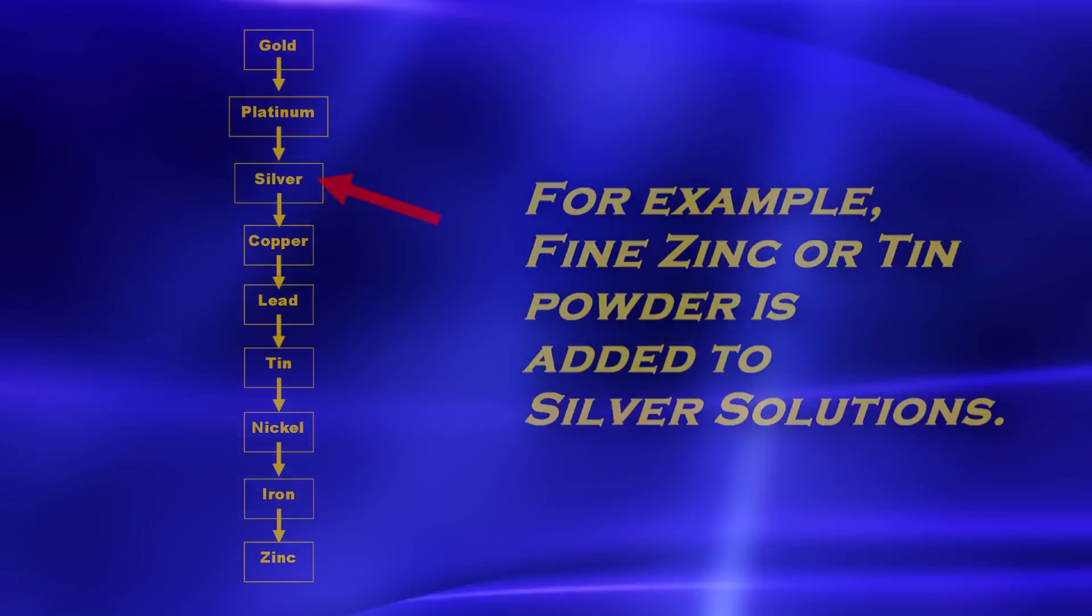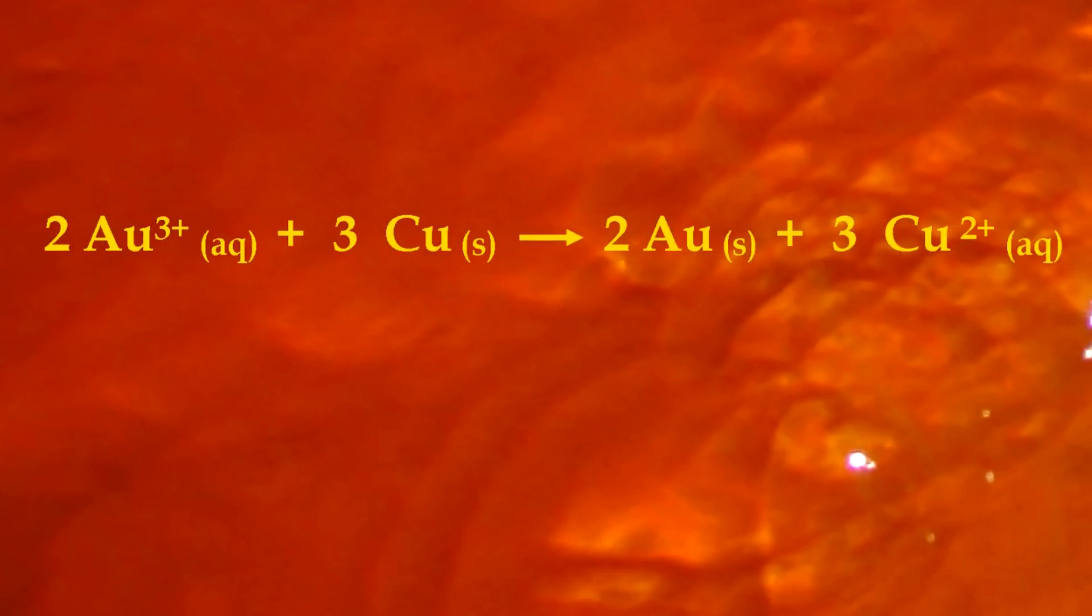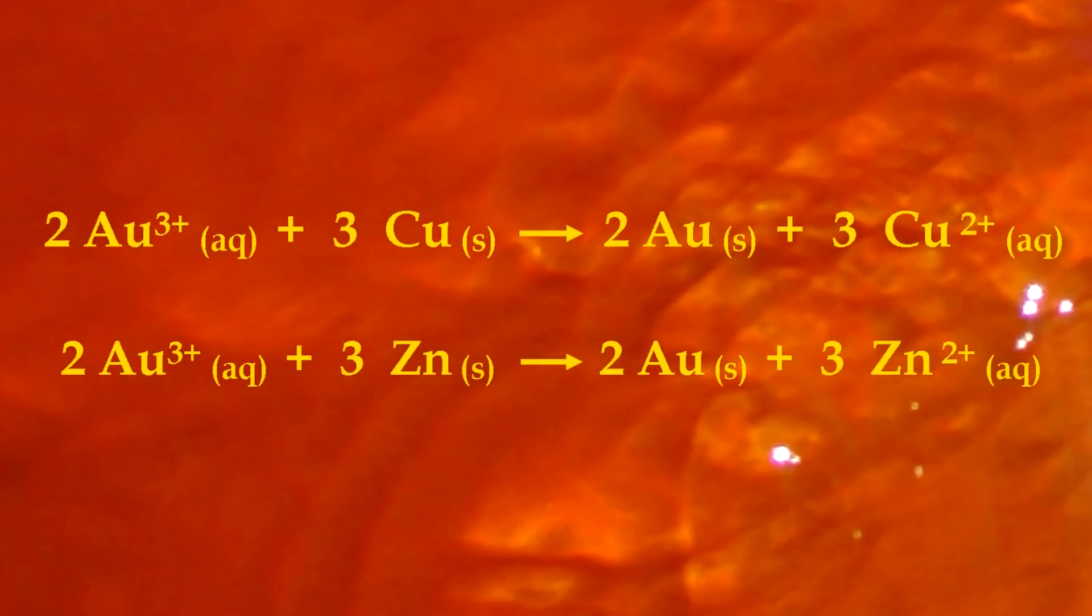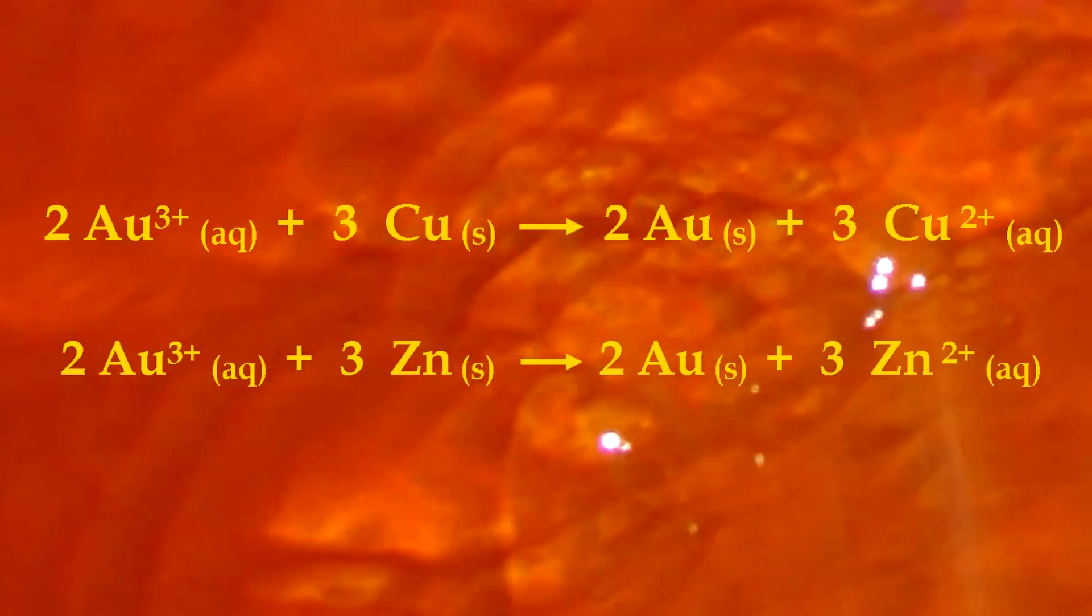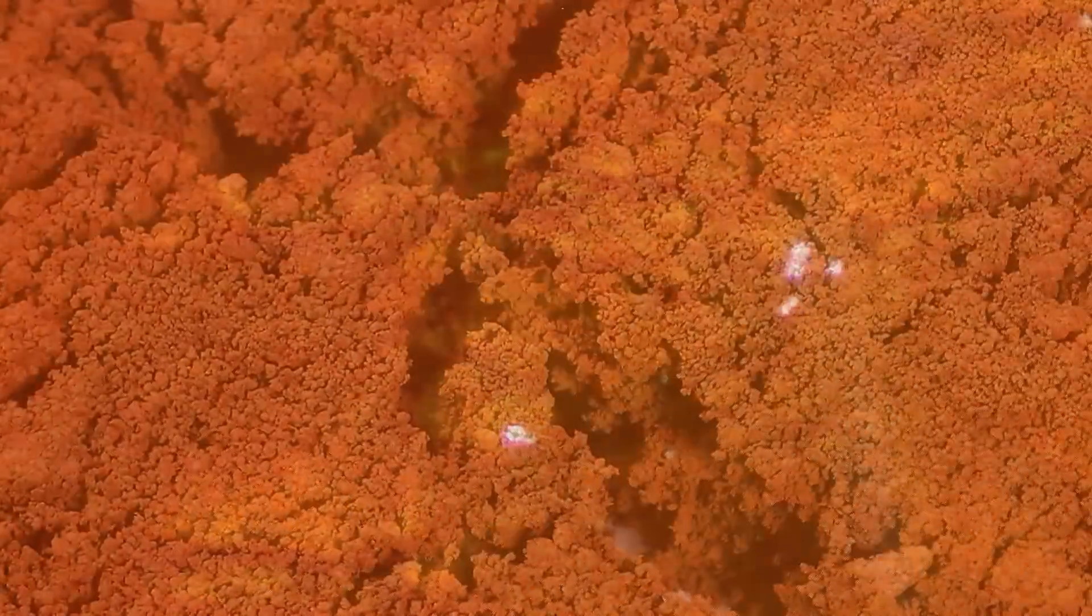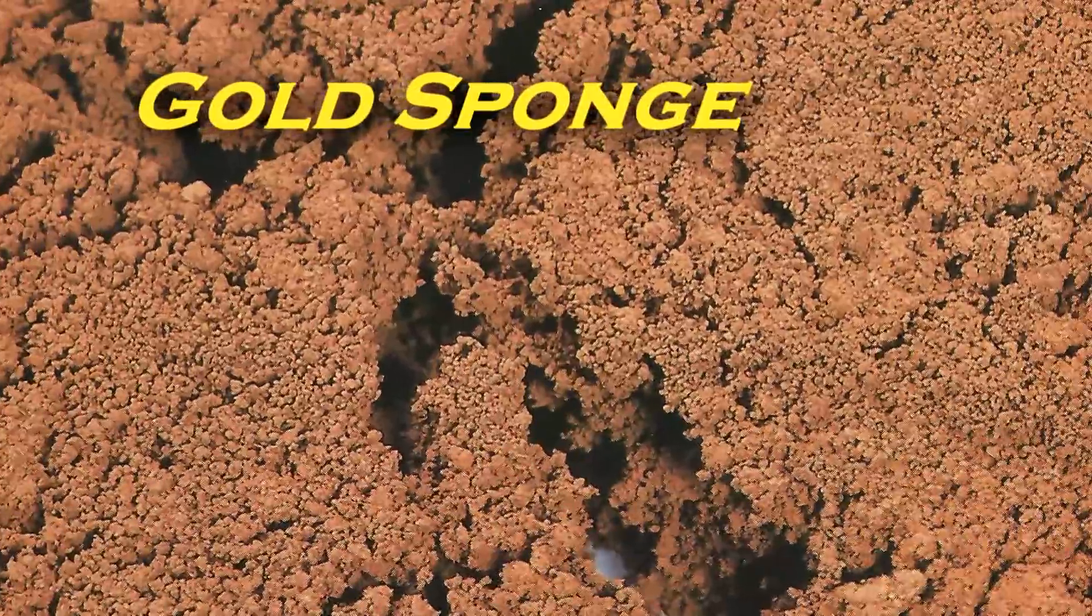An example of this galvanic reduction is metallic gold being created from a solution of gold chloride. Either copper or zinc powder can be used. The precipitated fine gold is referred to as gold sponge.